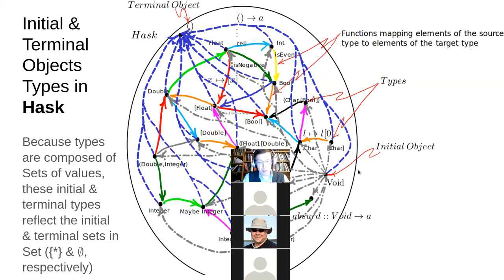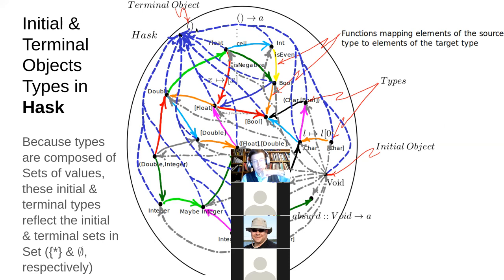In Haskell, the terminal object is the unit type, also denoted with the unit token. Every other type maps to it uniquely — if you have something that maps from Bool to unit, there's only one possible function: no matter what Bool it's given, it gives unit. No matter what double you're given, you give back this value. It's unique.